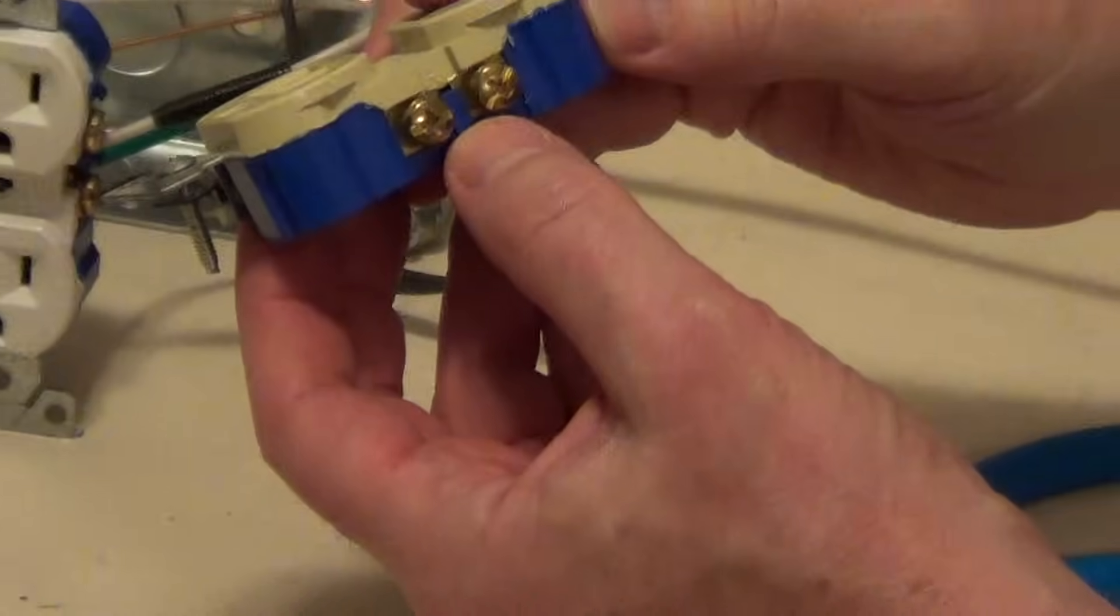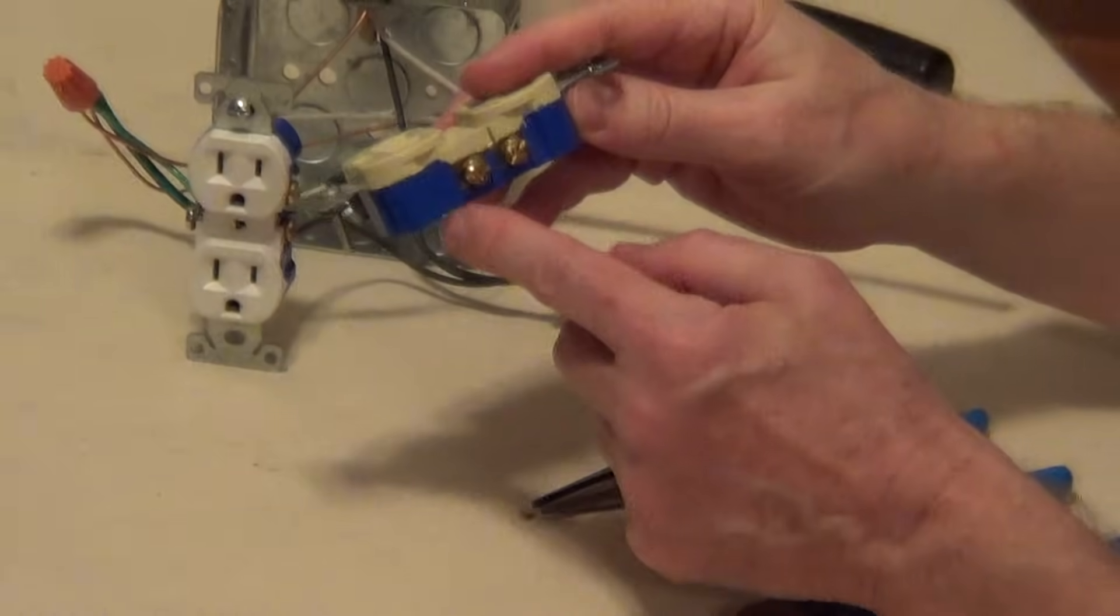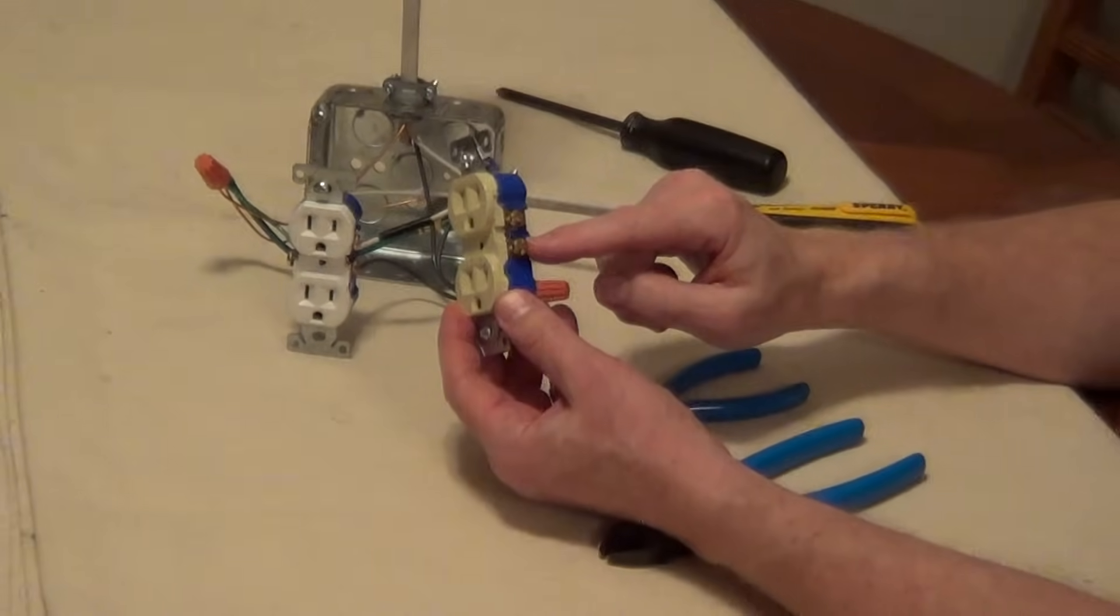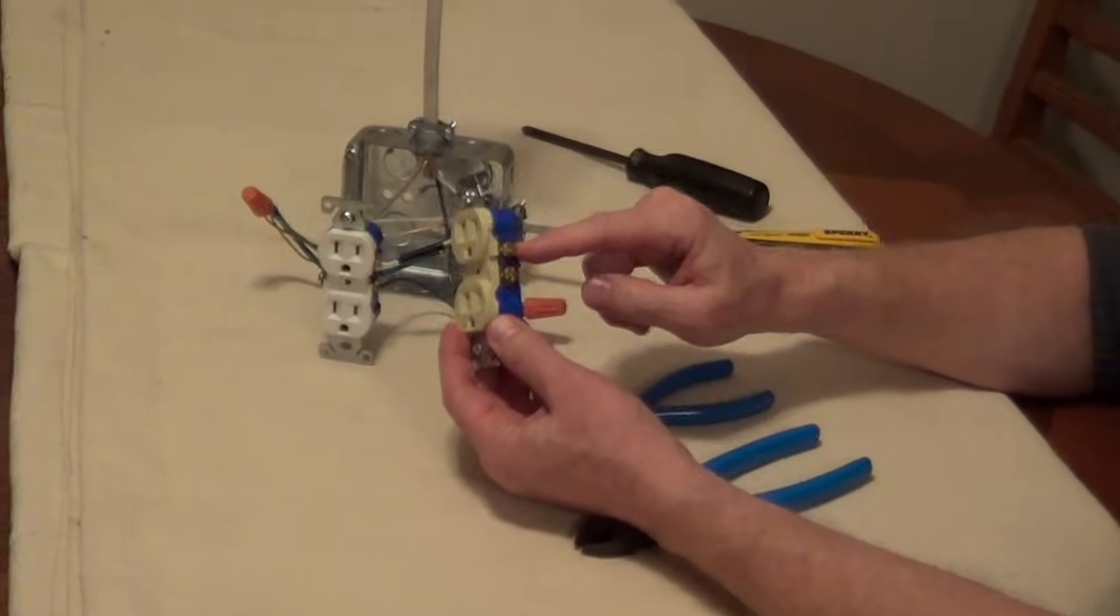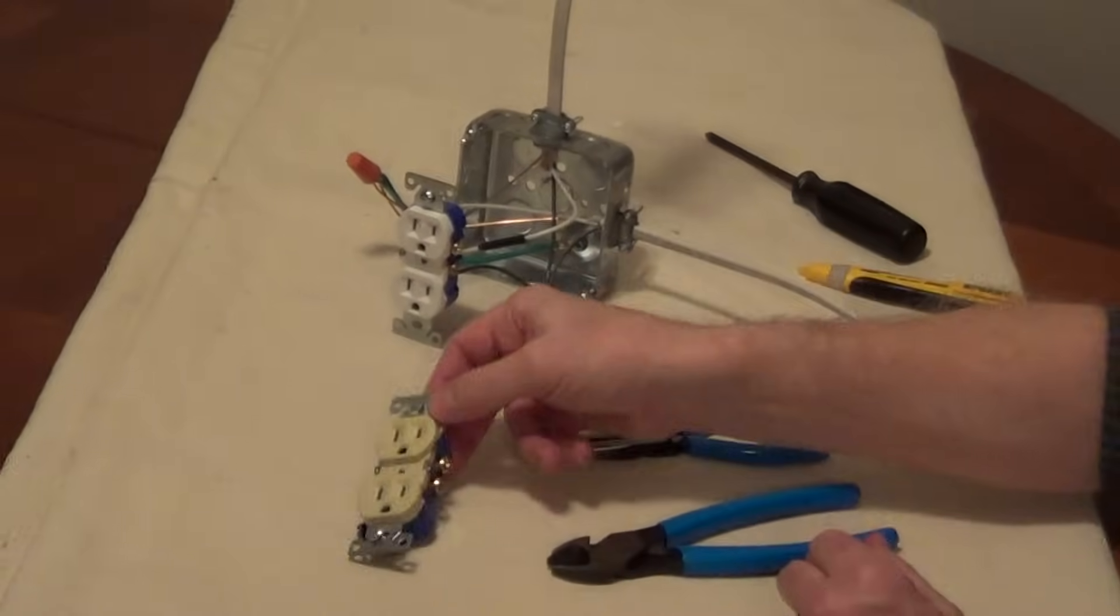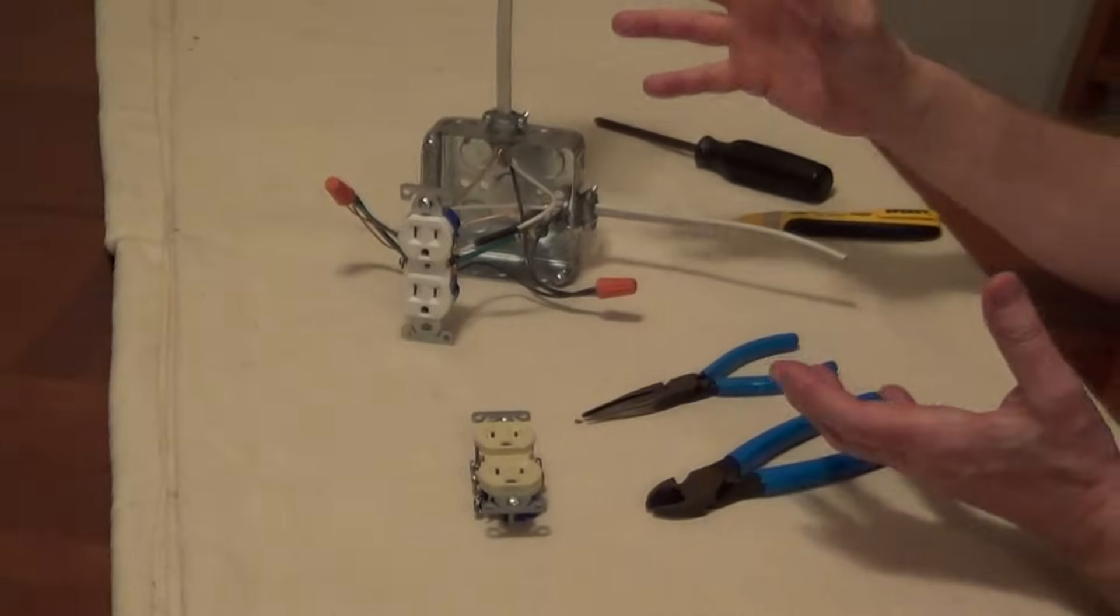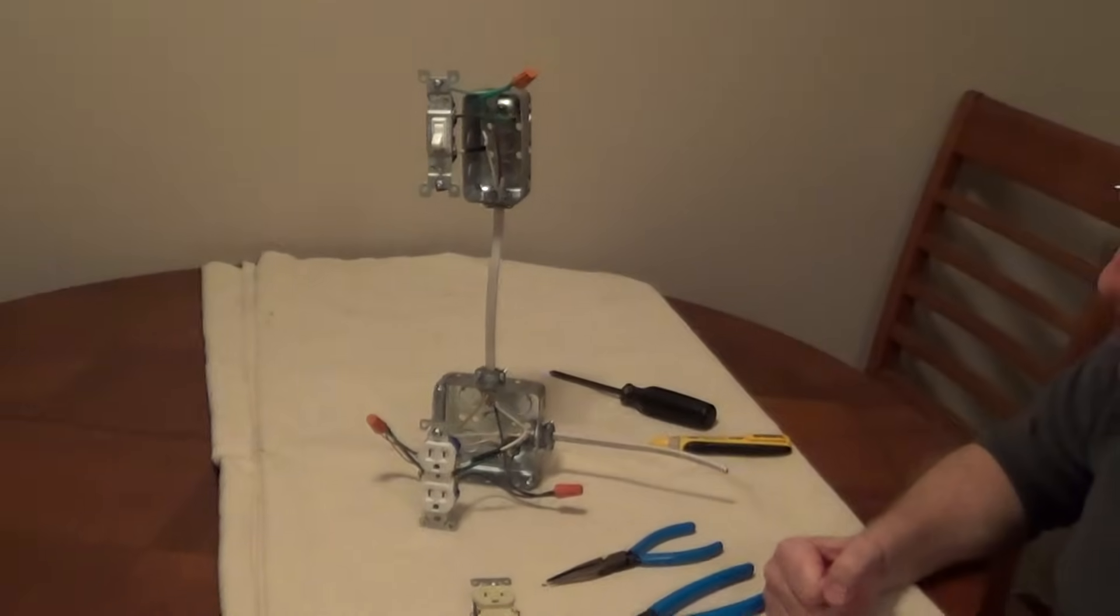And now these are completely distinct. They're separated, so we can have one hot that's always going to be on on the bottom and then our hot on top is controlled by the switch. So very simple to do, and that's the wiring scheme for a switched outlet.